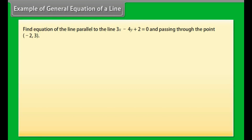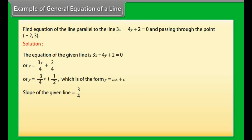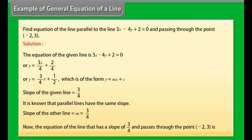Example: Find the equation of the line parallel to 3x − 4y + 2 = 0 and passing through the point (−2, 3). The given line can be written as y = (3/4)x + 1/2, so its slope is 3/4. Since parallel lines have the same slope, the new line also has slope m = 3/4. The equation of the line with slope 3/4 passing through (−2, 3) is 3x − 4y + 18 = 0.